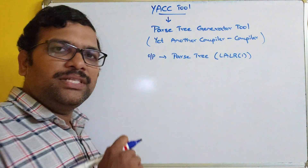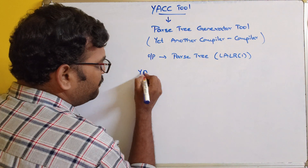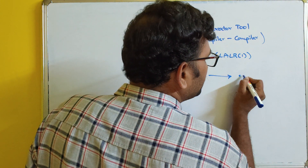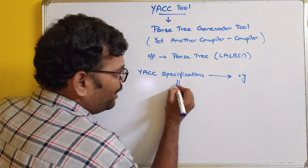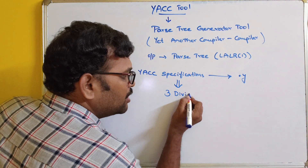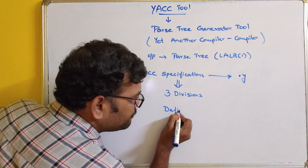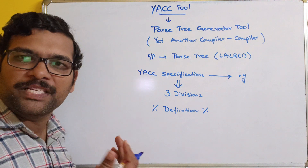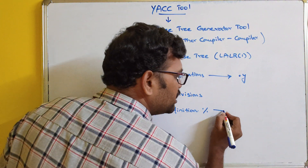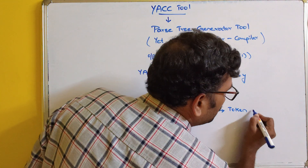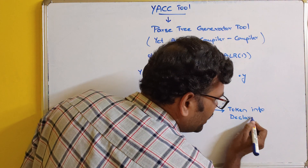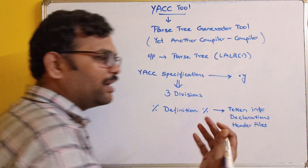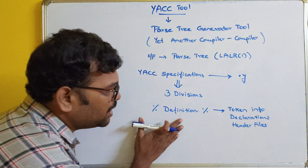We will be having some YACC specifications with a filename having the dot Y extension. These specifications are divided into three sections. The first section is the Definition section, enclosed between percentage symbols. This section defines all the tokens, token information, declarations, header files, constant declarations, and variable declarations.